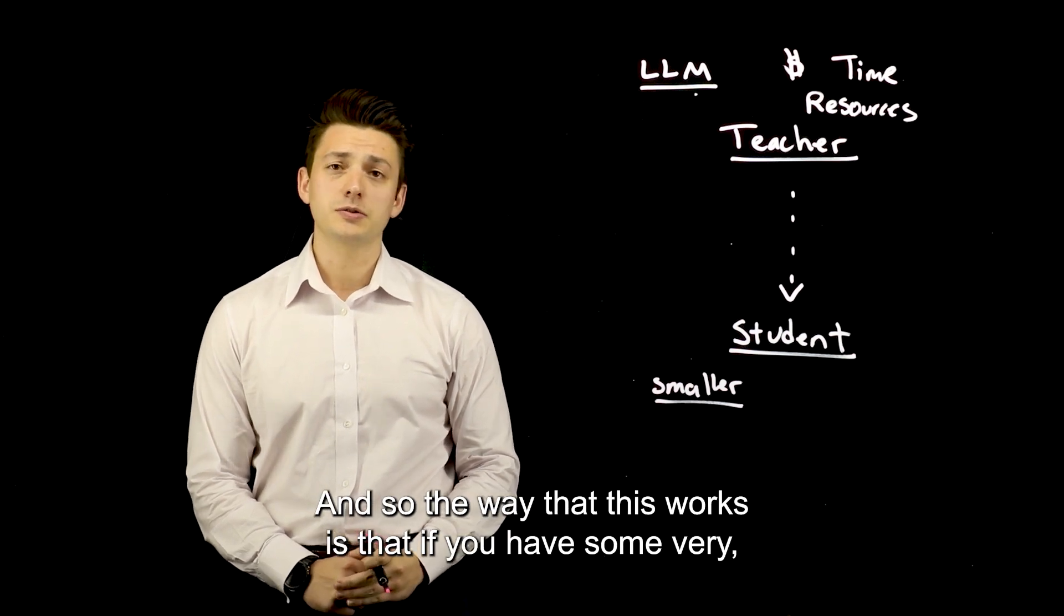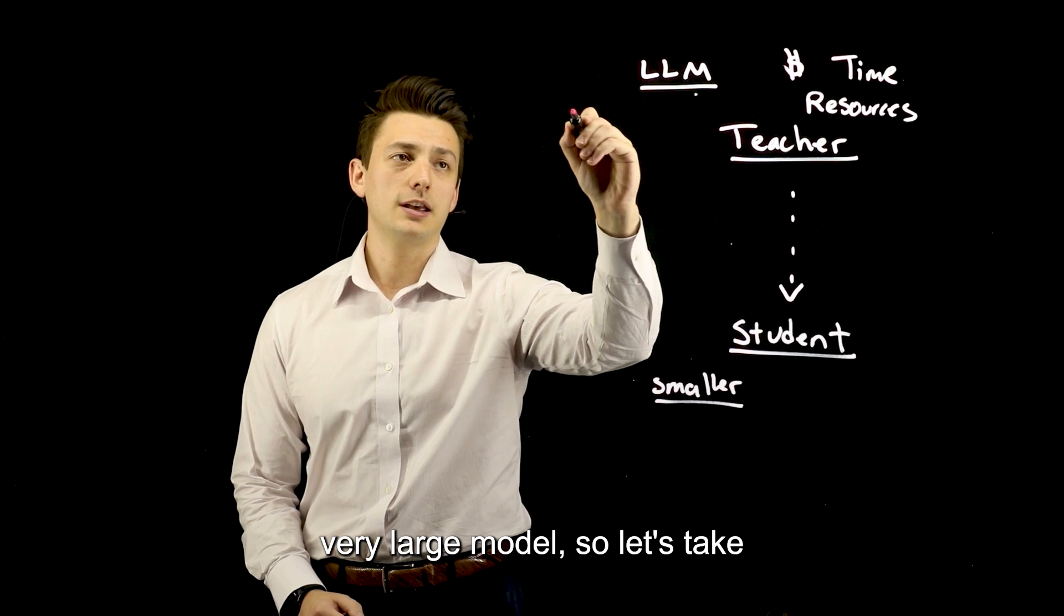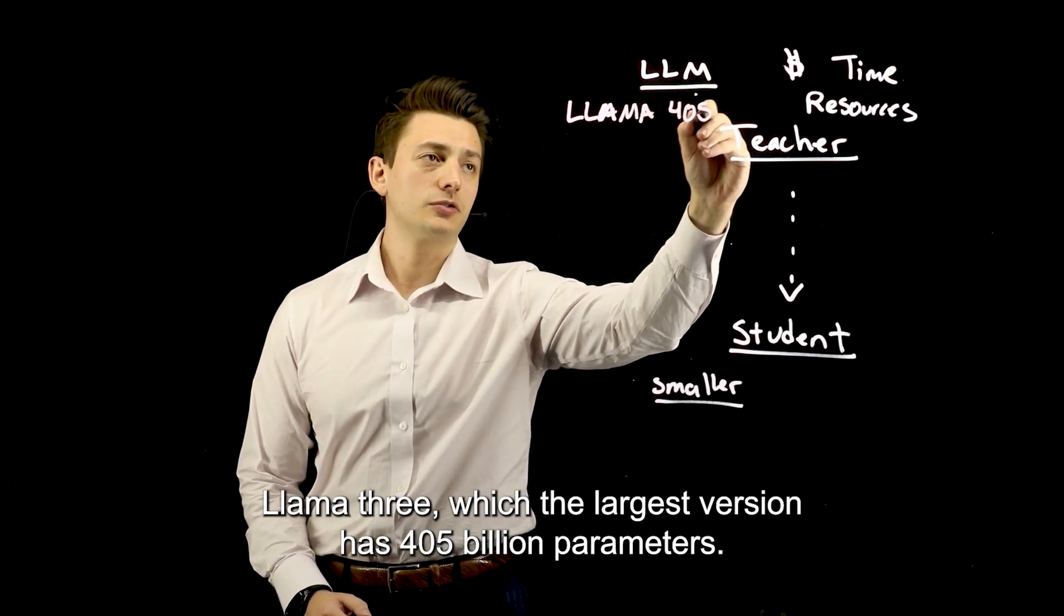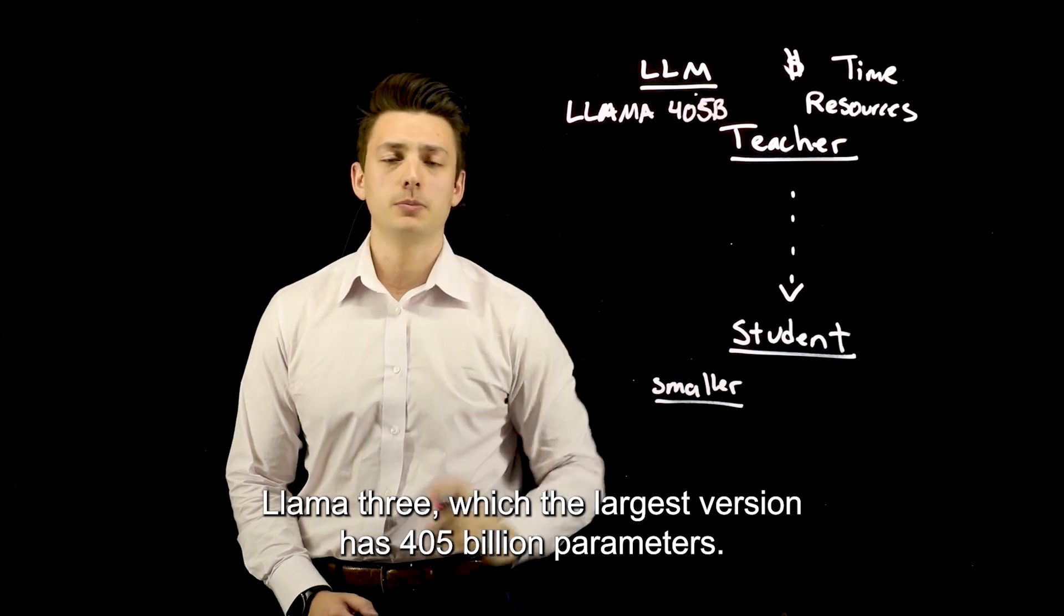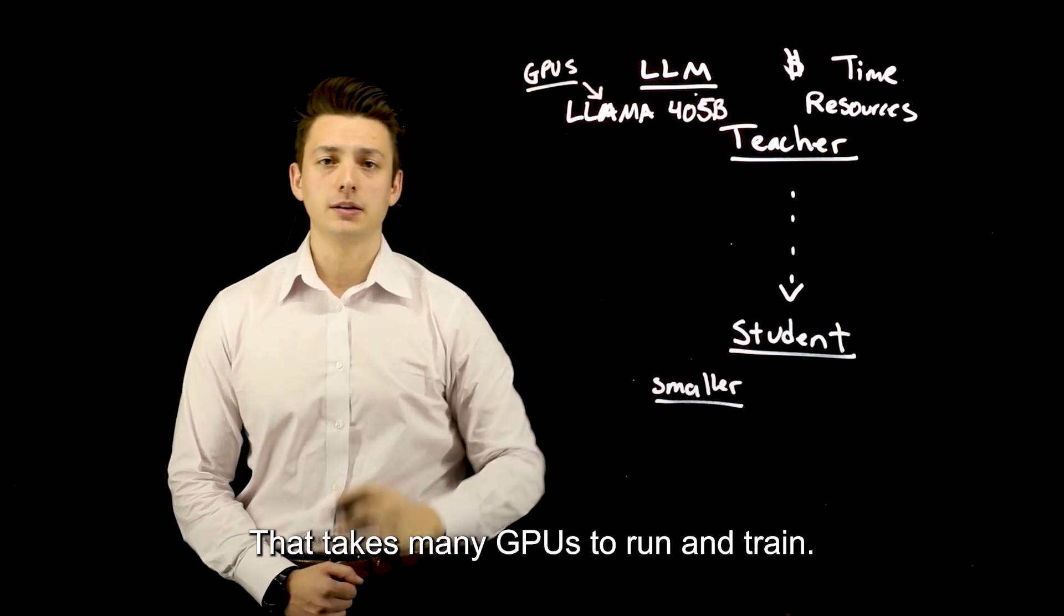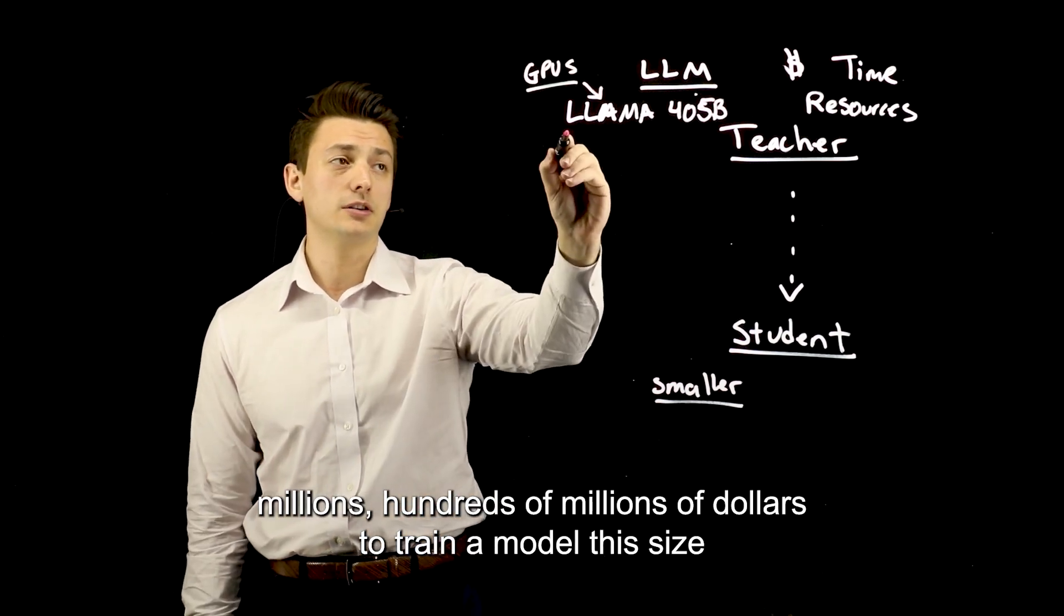And so the way this works is that if you have some very, very large model, so let's take Llama 3, which the largest version has 405 billion parameters, that takes many GPUs to run and train. So it takes over millions, hundreds of millions of dollars to train a model this size.